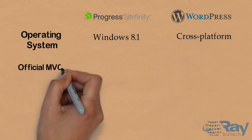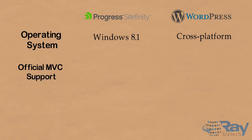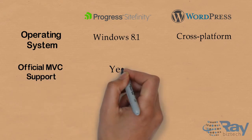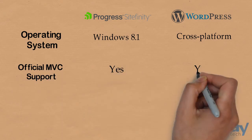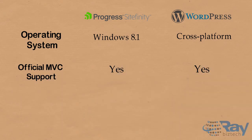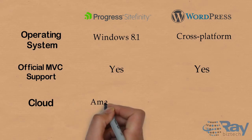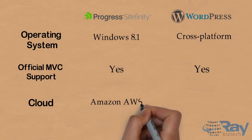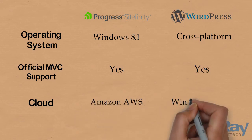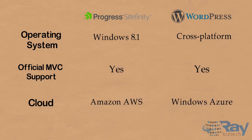For Progress Sitefinity, the operating system is Windows 8.1, and for WordPress it's Cross Platform. Official MSA support: Sitefinity supports Official MSA and WordPress also supports it. Cloud for Sitefinity is Amazon AWS, and for WordPress it's Windows Azure.